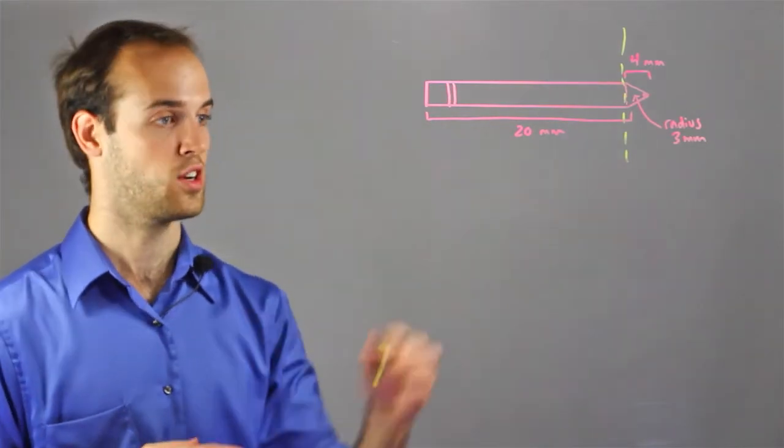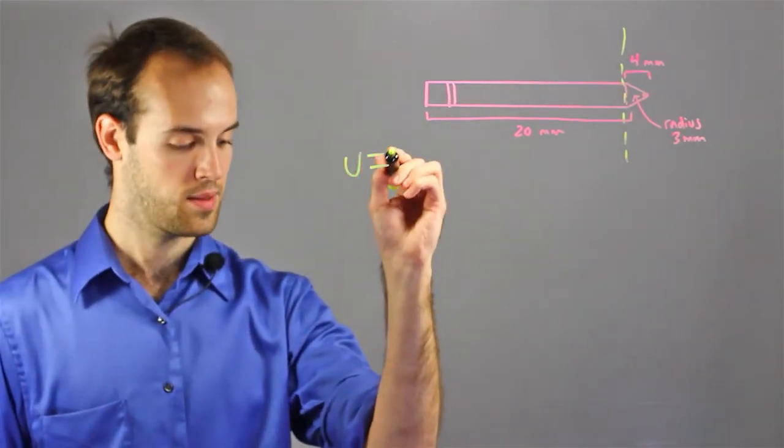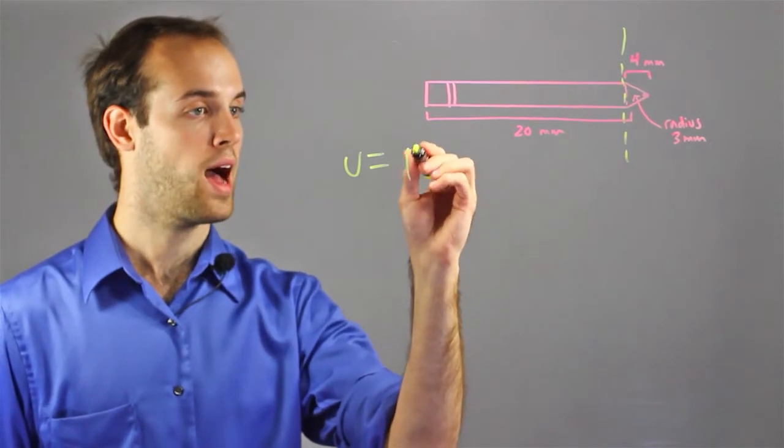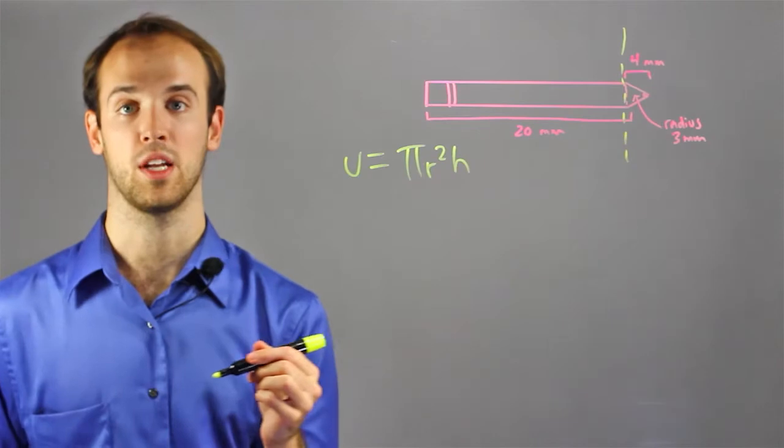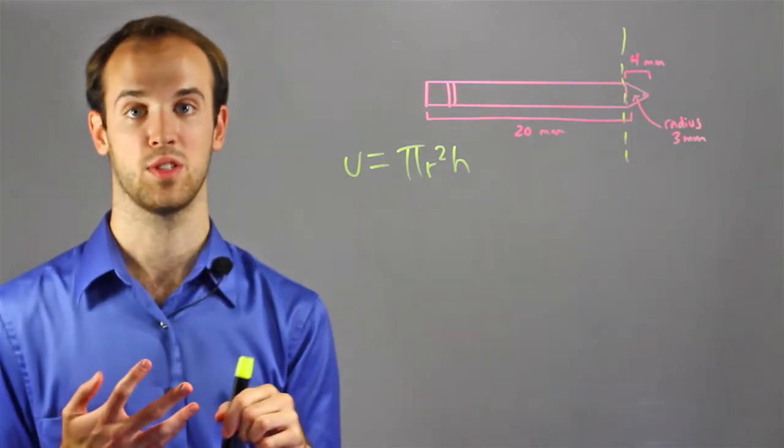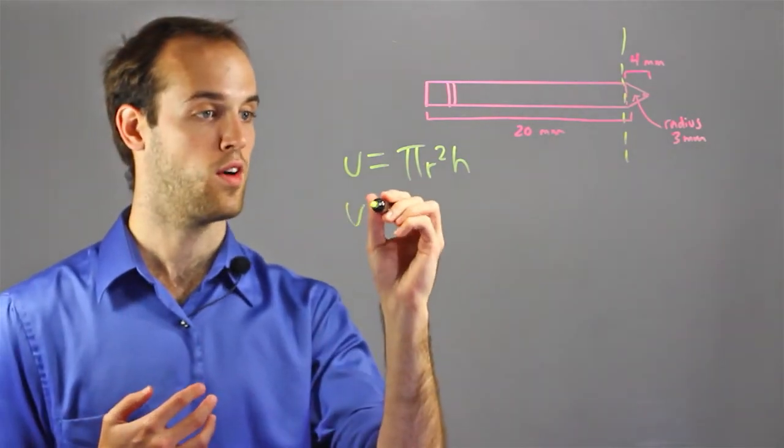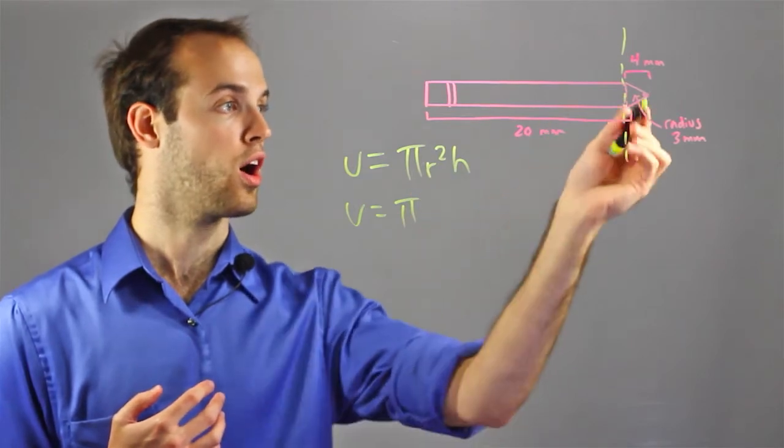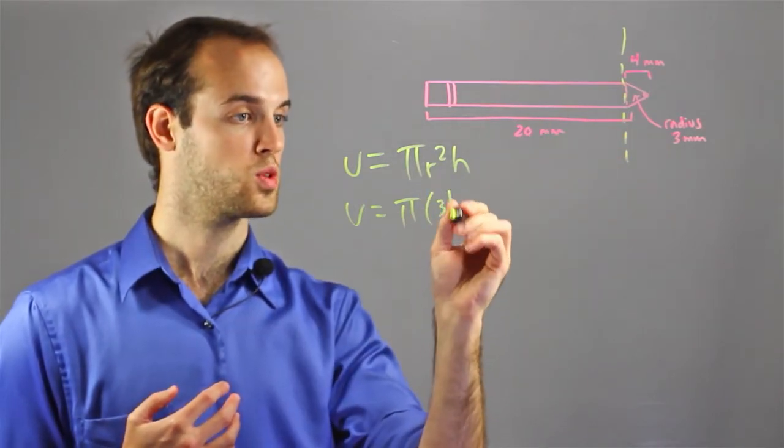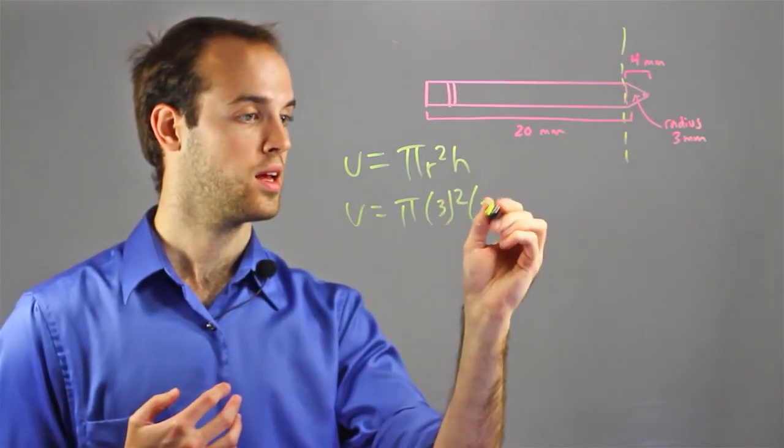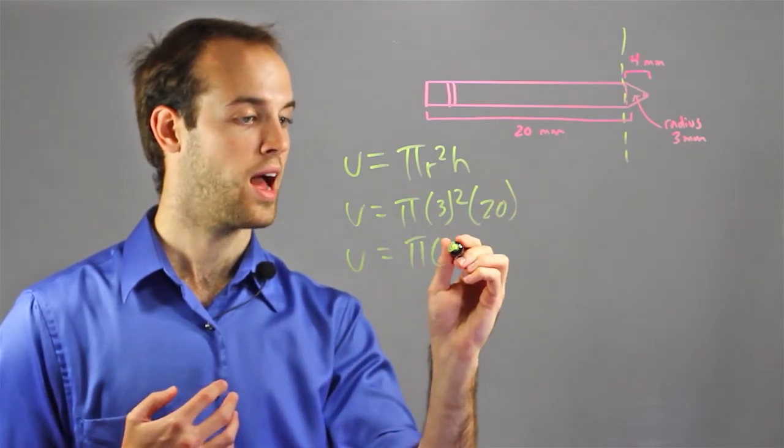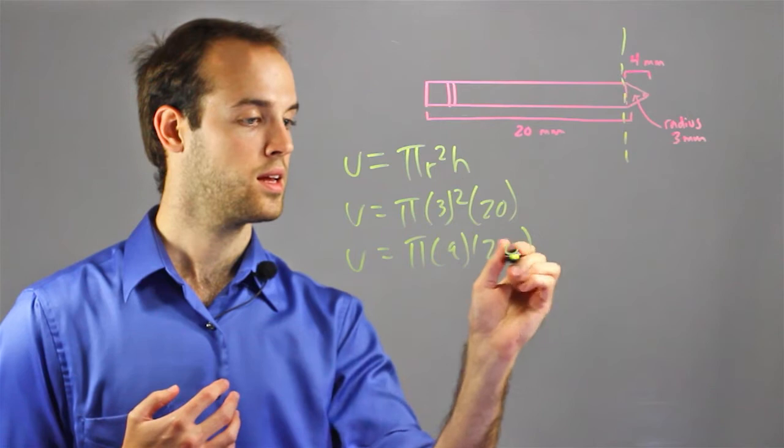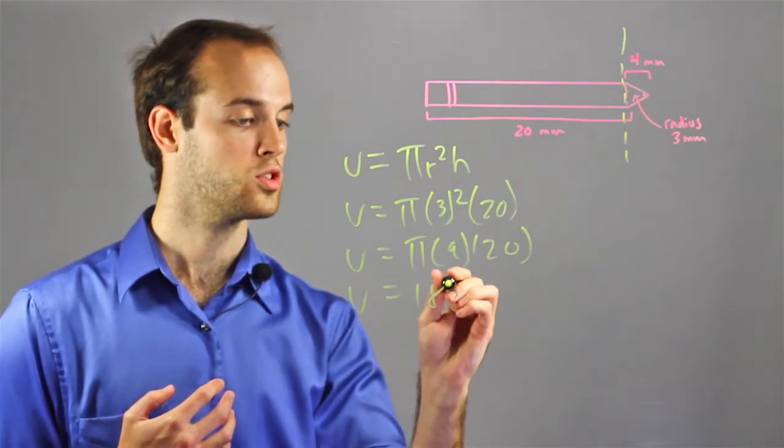So, let's start with the cylinder. The volume of a cylinder is πr²h. So, all I'm going to do is plug in the values into these variables. I have V = π(3)²(20). So, V = π × 9 × 20. V = 180π.